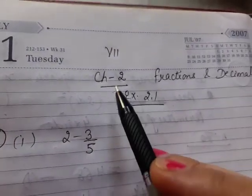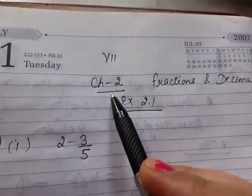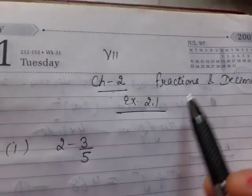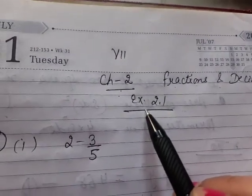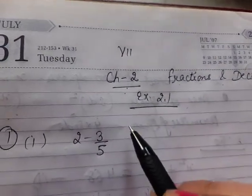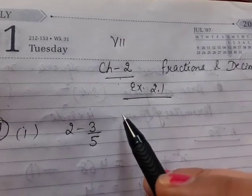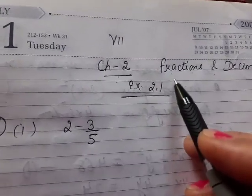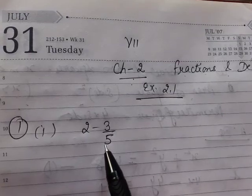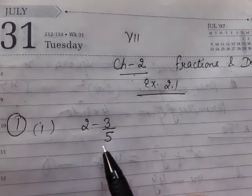Let's start students, our new topic: Chapter number 2, Fractions and Decimals. Today we start Exercise 2.1. In the last session we discussed the introduction - what are fractions and their types. Today we solve fractions by taking the LCM of denominators.